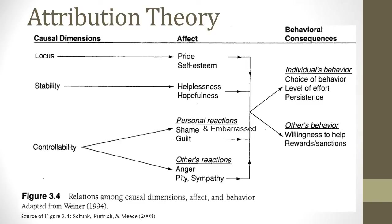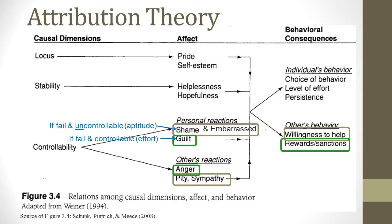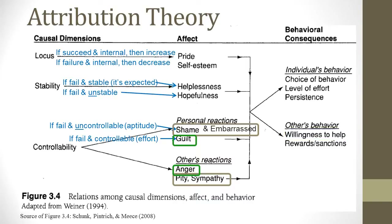With respect to controllability, if you fail and attribute it to an uncontrollable cause such as aptitude, then you're probably ashamed and feel embarrassed. Interestingly, if others see you fail and believe it's due to an uncontrollable cause such as aptitude, they'll feel pity and be sympathetic — and may be willing to help you. Now if you fail and believe it's controllable, such as not putting forth enough effort, you may feel guilty, and others may get angry at you for not trying hard enough and might not reward you or give some type of punishment. Attribution theory helps us understand why individuals and others have the emotions they do in these different cases.